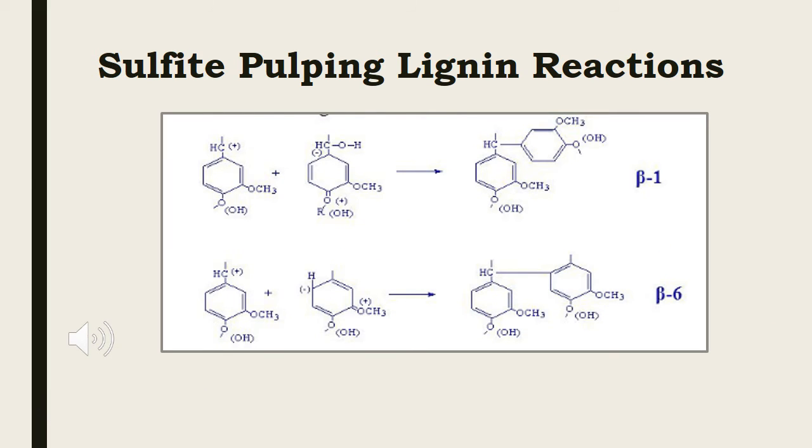Condensation reactions are very prevalent in acid sulfite pulping. So, molecular weight of lignin must significantly increase. This is a disadvantage to lignin removal. It is supposed that lignin molecules are linked through lignin-carbohydrate-lignin linkage. During acid sulfite pulping, the carbohydrate is cleaved through acid hydrolysis, thus lowering the lignin molecular weight.